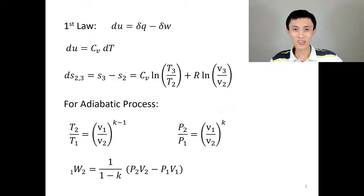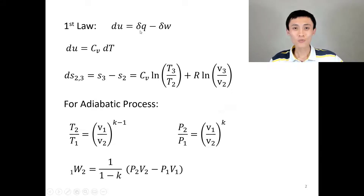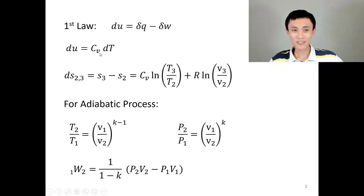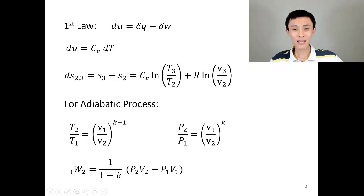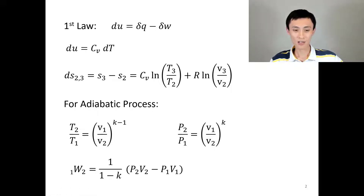Before we start the example, here are the common formulas we will use. The first law: energy change equals heat transfer minus work done — du = dq − dw. From the caloric equation of state: du = cv·dT. For entropy change, we use the Gibbs equations. For adiabatic processes, we have the temperature-pressure relation. The work formula for an adiabatic process is also shown here. Since the working medium for the Otto cycle is air, k = 1.4. You can look up thermodynamic tables for other constants.